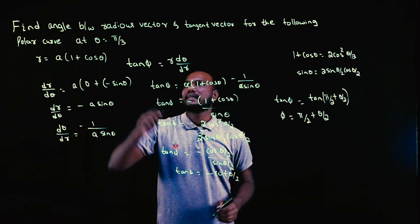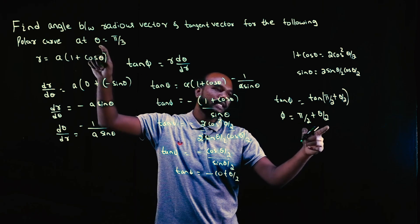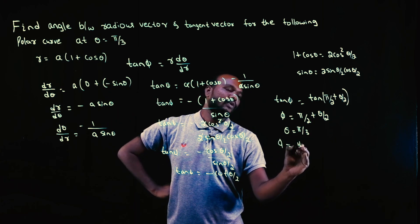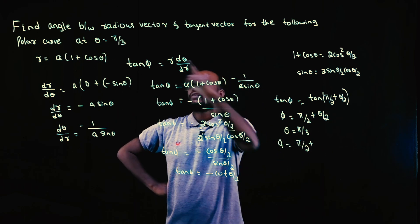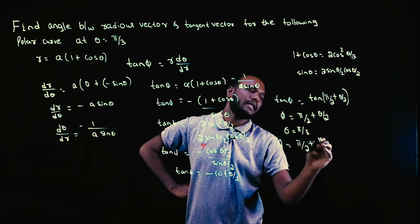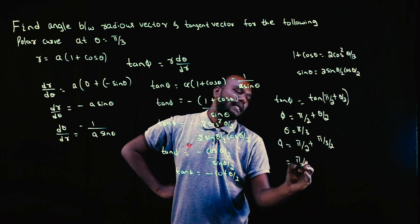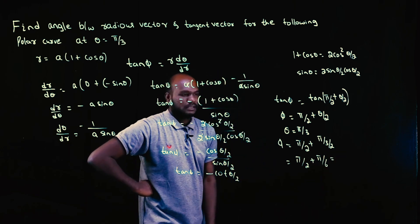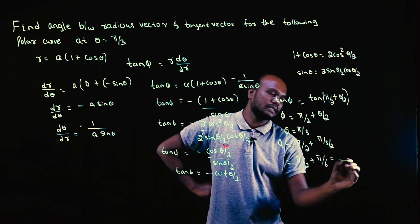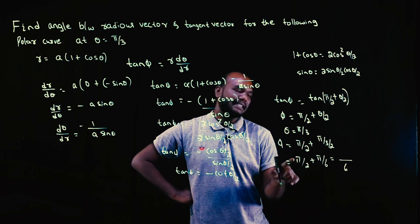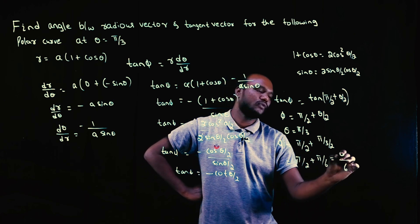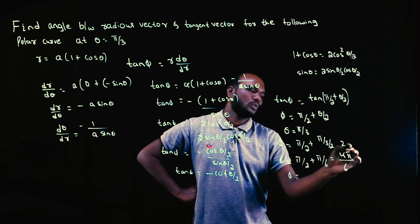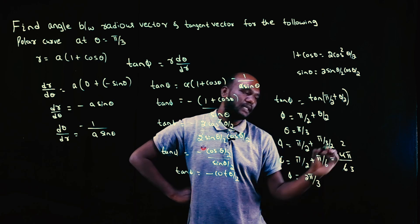Now see here, the theta value is given as pi by three. Just substitute that. So phi equals pi by two plus pi over three by two, which becomes pi by two plus pi by six. What is the LCM? LCM is six. Three pi plus one pi is four pi. So phi value is two pi upon three.